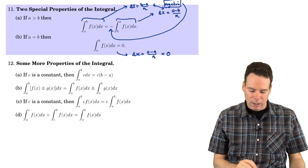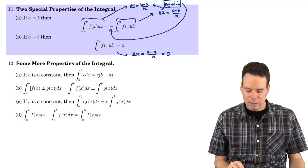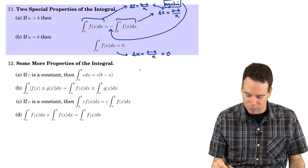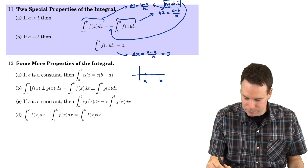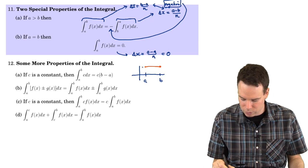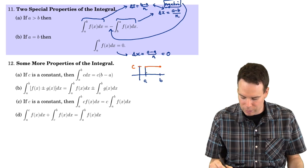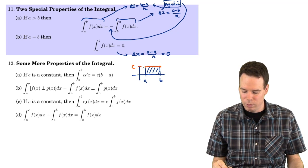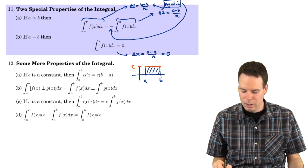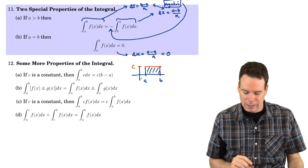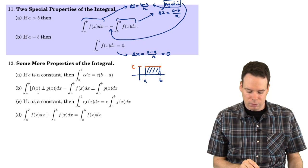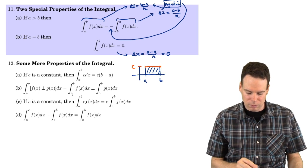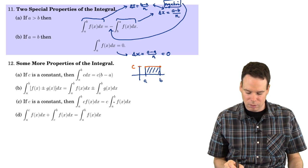Some more properties. If c is a constant, then the integral of a constant is just c times the length of the interval. If the region spans from a to b and the function is the constant c, the integral represents the area of a rectangle: height c times width b minus a. Also, the integral of a sum is the sum of the integrals, the integral of a difference is the difference of the integrals, and the integral of a constant times a function is the constant times the integral.